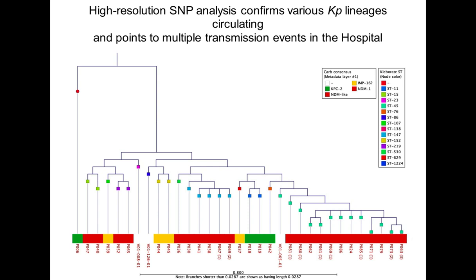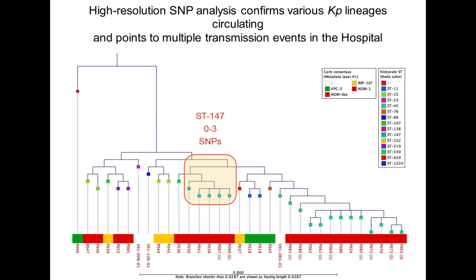Building a high-resolution SNP tree based on single nucleotide polymorphisms against a reference Klebsiella genome enables very high-resolution typing and determination of how different related isolates are. The 15 ST45 isolates differ from each other in just 0 to 4–5 SNPs, which is highly suggestive of a single bacterium being directly transmitted between patients — from the ER and the ICU — by physical contact. A similar pattern is seen for ST147, with 0 to 3 SNPs, again supporting direct transmission between patients in this hospital.